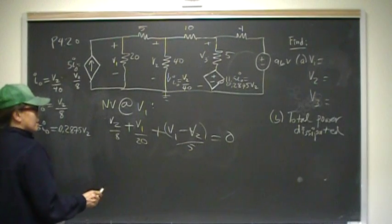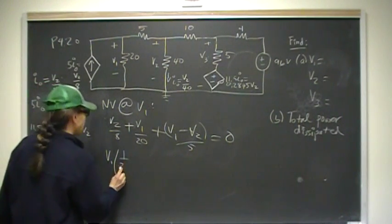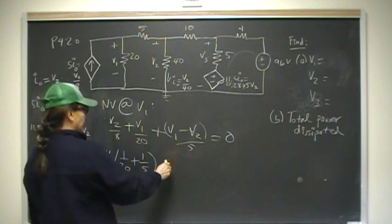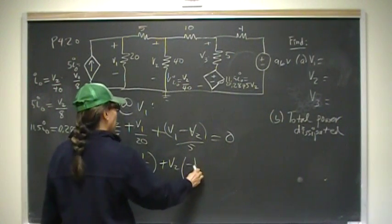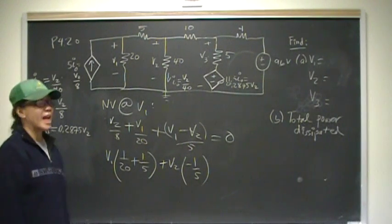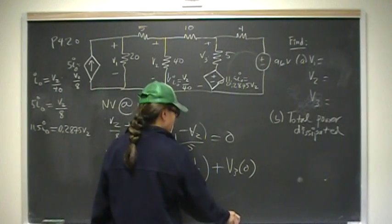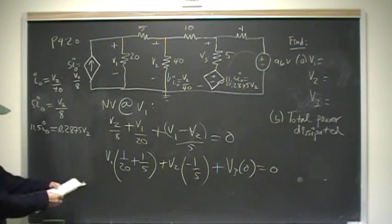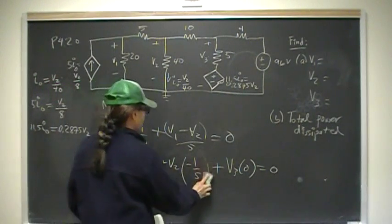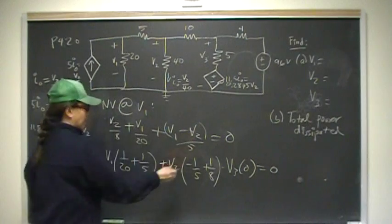We're going to set up a matrix and group all the coefficients. We have V1, V2, V3. For V1, I have 1 over 20 plus 1 fifth. For V2, I have negative 1 fifth minus 1 eighth. Let me double check: 1 fifth, negative 1 eighth. I'm missing a V2, so this should be negative 1 fifth plus 1 eighth. And 0 V3s. That equals zero.